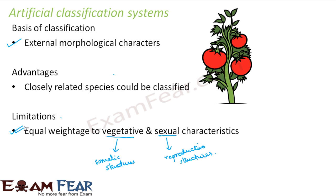Sexual characteristics should get more importance than vegetative characteristics. Because of this limitation, many species that differed in their reproductive structures were placed in the same group just because their somatic structures were similar — even though their reproductive process was completely different. This was a very important limitation of the artificial classification system.